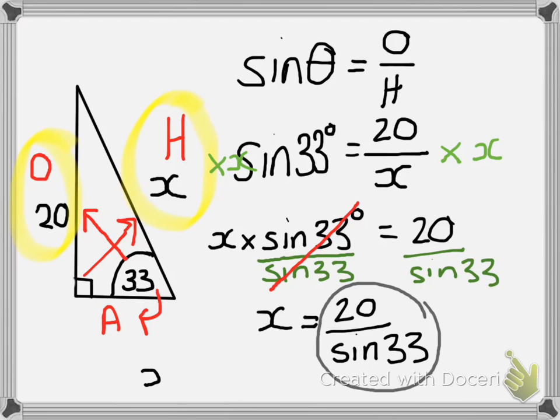I've put that into my calculator and it's given me an answer of x equals, to two decimal places, 36.72. I hope you find this helpful. Stay tuned for the next video.